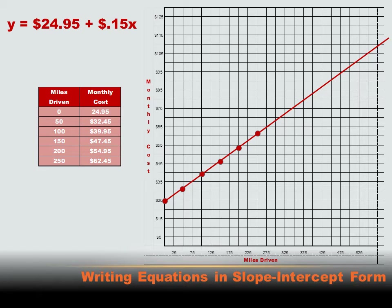I could go anywhere on this straight line and figure out what the cost would be for various mileages. For instance, if I drove 475 miles, I'd come up to the line and go over to the total cost — and I could see that would be less than $95. That line helps us understand the cost a lot better. And amazingly, that line represents the equation we wrote — this equation and this line tell us exactly the same thing.